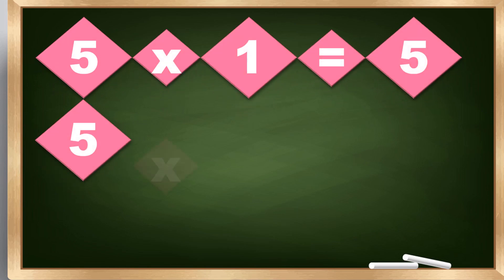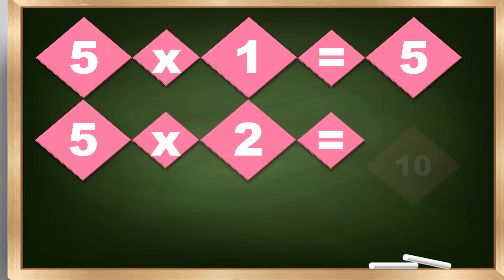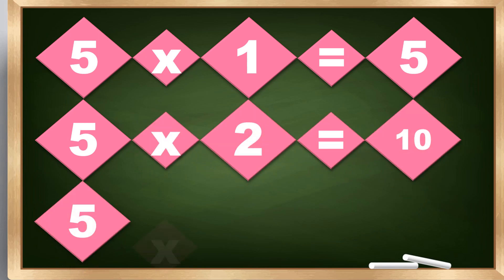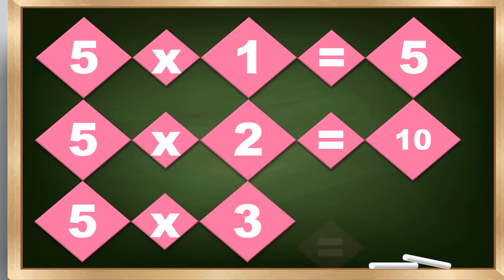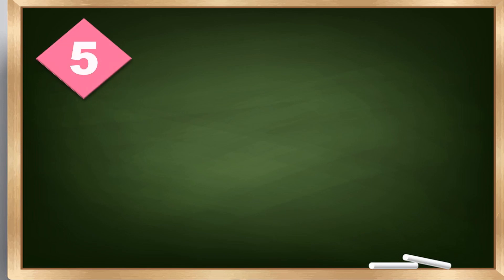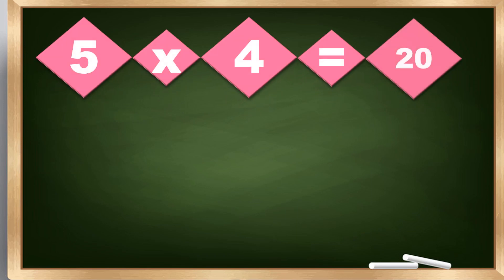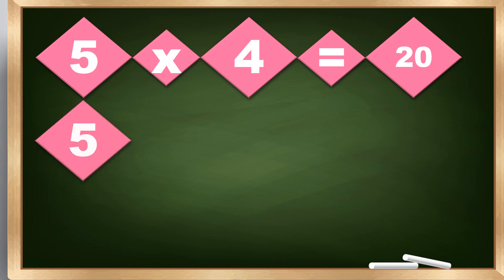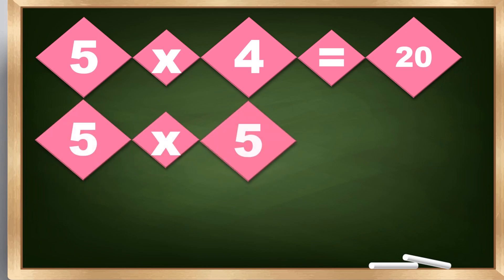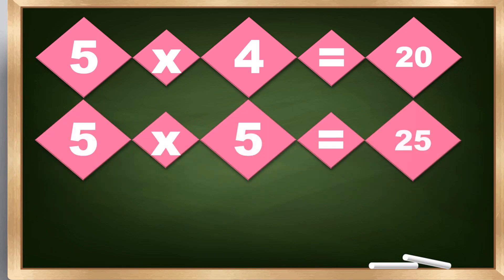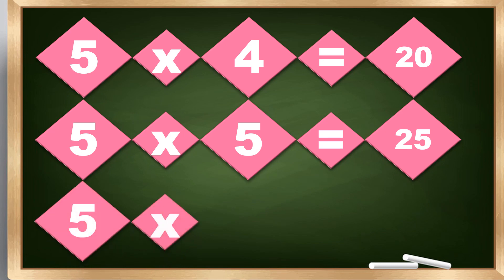5 times 2 equals 10. 5 times 3 equals 15. 5 times 4 equals 20. 5 times 5 equals 25. 5 times 6 equals 30.